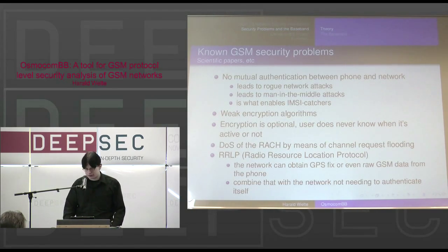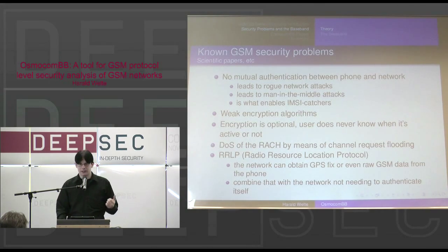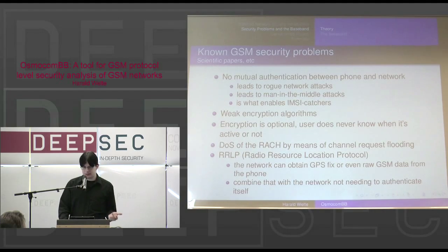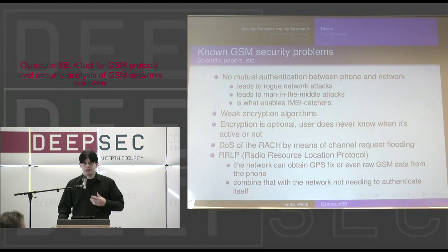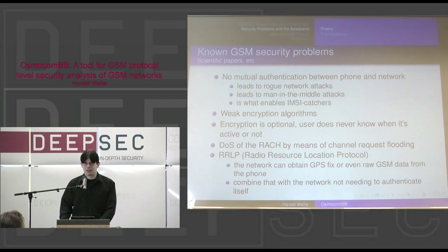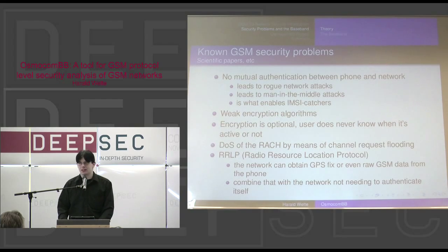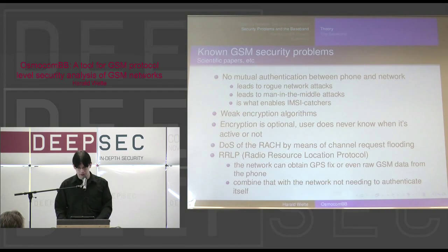There are a number of known problems with GSM. We have no mutual authentication between the telephone and the network, so the telephone can never know whether it's connected to a real network, which enables rogue network attacks, man-in-the-middle attacks, and IMSI catchers. We have weak encryption algorithms, and encryption is optional. We have denial of service on the random access channel. And there are strange protocols by which the unauthenticated network can inquire about GPS coordinates — conceptual security, privacy, and confidentiality problems in the specification.